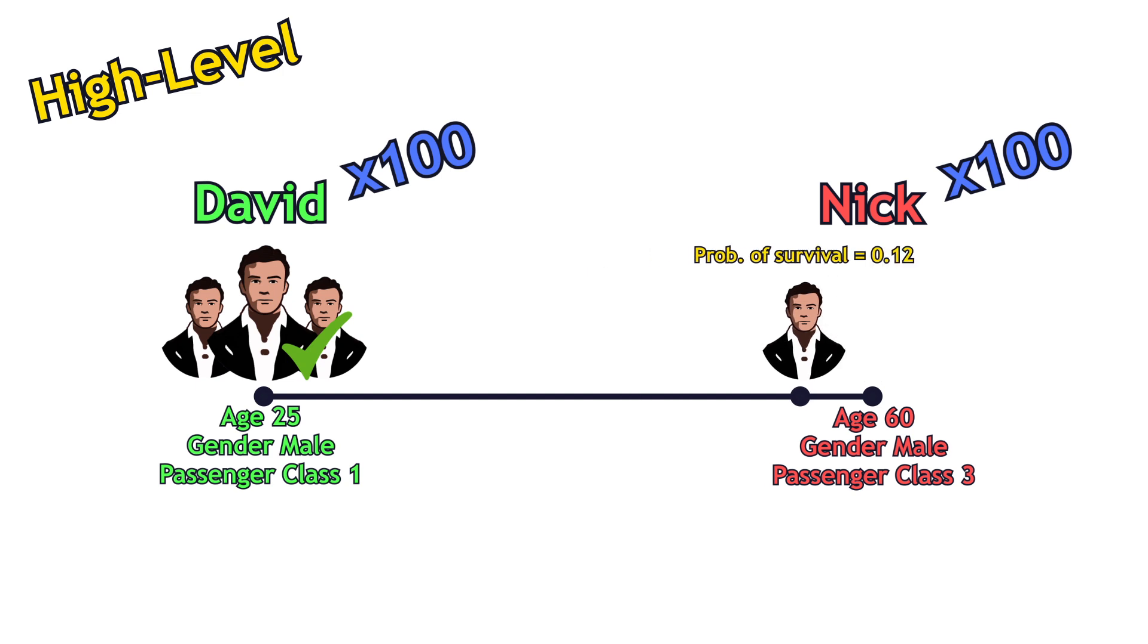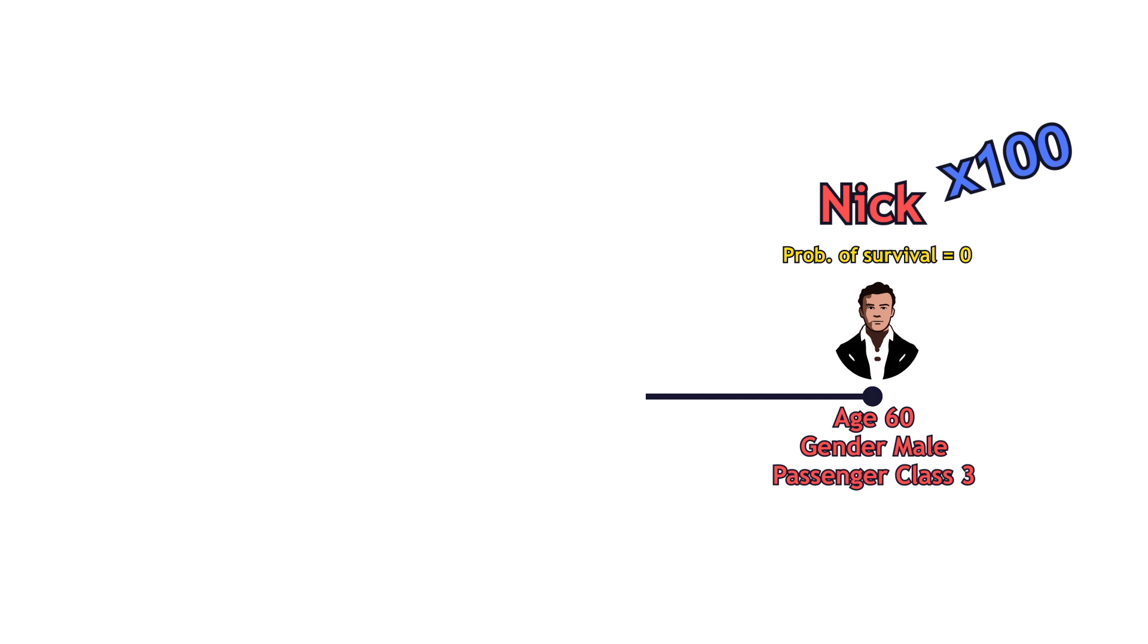At some point, we would say that the new passenger would not survive the accident. That is the high-level idea of how supervised learning algorithms work. Let's see how they work at a low level.